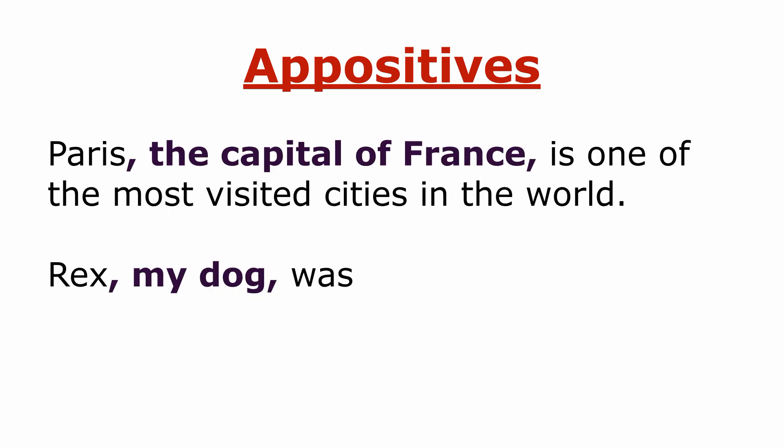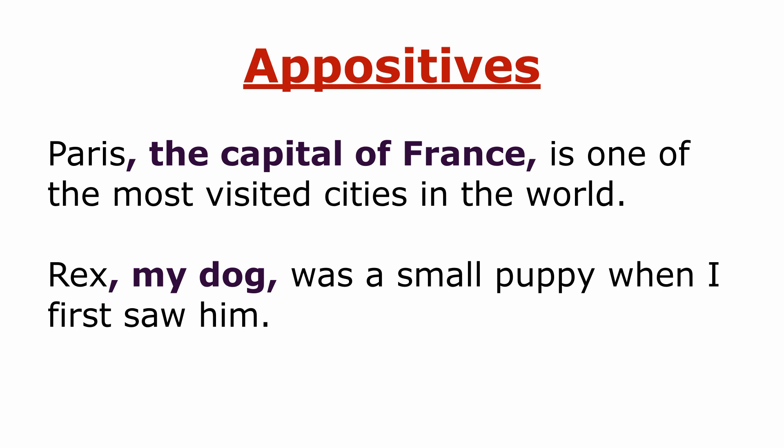We also need commas to separate appositives. An appositive is a noun or noun phrase that is next to another noun to rename it or to describe it in another way. It should be separated with commas. For example: 'Paris, the capital of France, is one of the most visited cities in the world.' And: 'Rex, my dog, was a small puppy when I first saw him.'